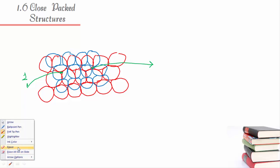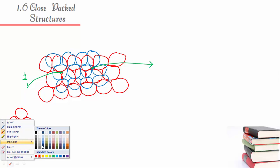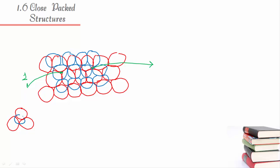In the first type of void, there are three balls below and one ball placed on top, so the void is closed. If you look at the center, it forms a tetrahedral shape — and this is called a tetrahedral void.